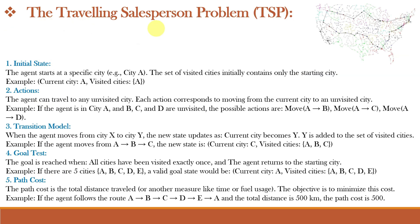The next example is the Traveling Salesman Problem, also called TSP in short. It is a touring problem about finding the shortest possible route to visit each city exactly once and return to the starting point. The goal is to minimize total travel distance or cost. It is used in delivery services, circuit design, and logistics. Since there are many possible routes, finding the best one is computationally difficult. TSP is a well-known NP-hard problem in computer science.